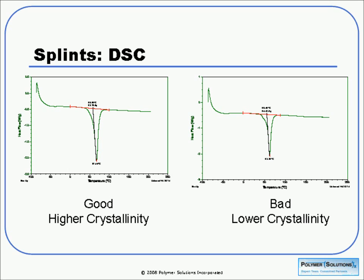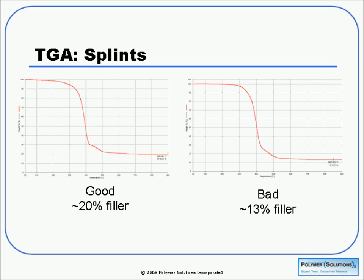In the way these splints were used, they were heated and formed. So the crystallinity could be affecting the stiffness of the sample at the particular temperatures they were heating at. We might expect that with the lower crystallinity in the bad sample, it might be a little bit too flimsy for their application — and that was indeed what they were seeing in some cases.